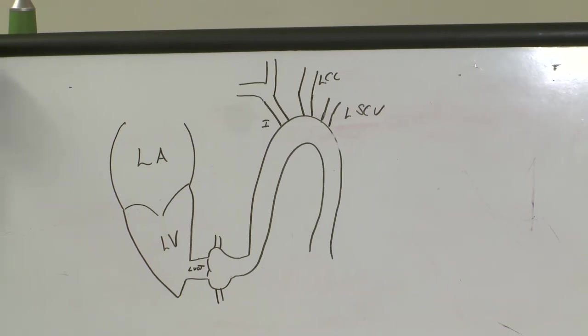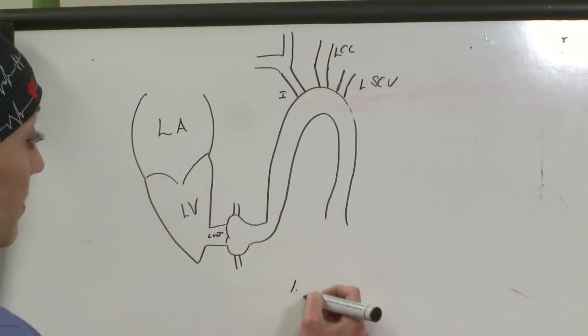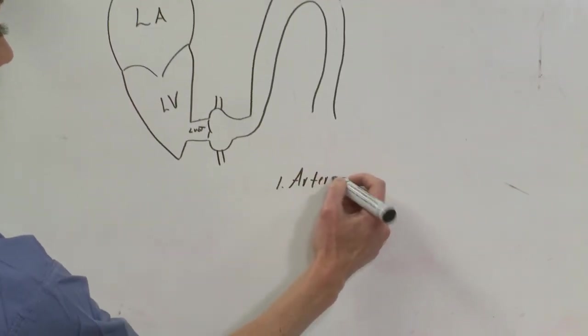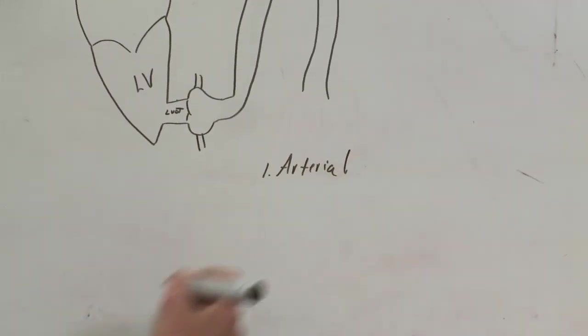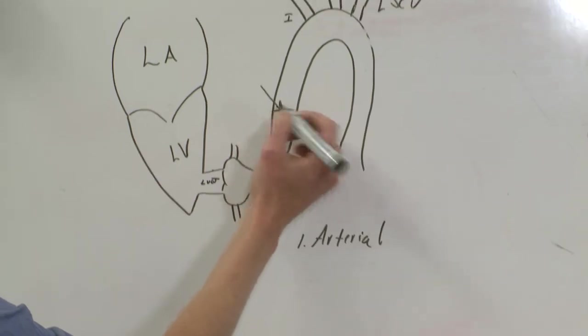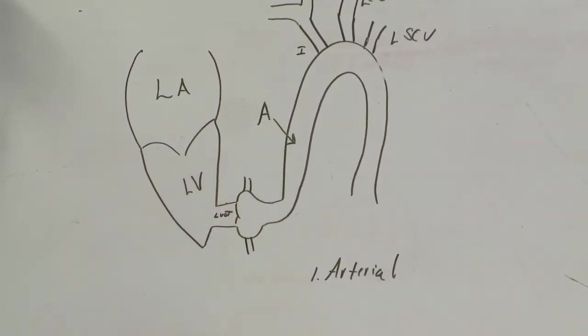So let's talk about cannulation. First, the number one first cannula that goes in is going to be your arterial. To go on bypass, you need a major artery and a major vein. So the first cannula is going to go in your ascending aorta. That's number one.